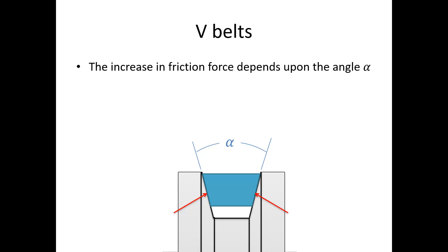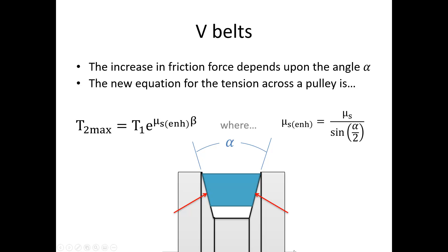The increase in friction depends on angle alpha. The smaller the angle alpha, the steeper the walls, the more friction we get. We use the same equation as before: T2 max equals T1 times e to the mu static enhanced times beta. The only difference is mu static enhanced. For V-belts, mu static enhanced is the old value of mu static divided by the sine of alpha over 2. We get a stickier belt based on the V-belt configuration. Other than that, it's the same formulas as before.